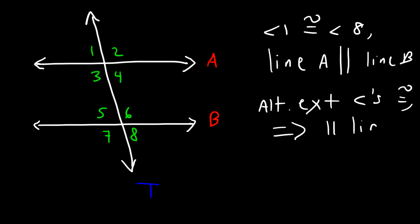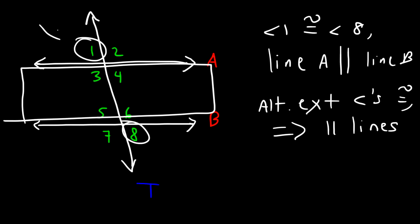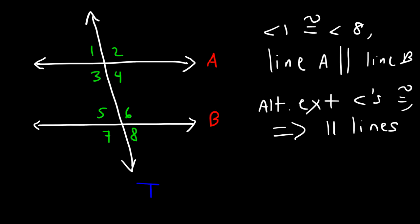This is the converse of the alternate exterior angle theorem. Angles 1 and 8 are alternate angles because they're on opposite sides of the transversal — 1 is on the left, 8 is on the right. Notice that they're outside the two lines, on the exterior. Exterior means outside; interior means inside. So if two angles are alternate exterior angles and they're congruent, you know the lines are parallel.